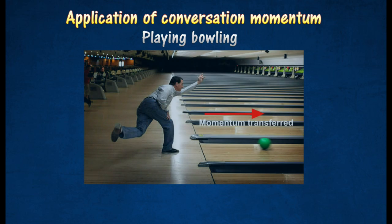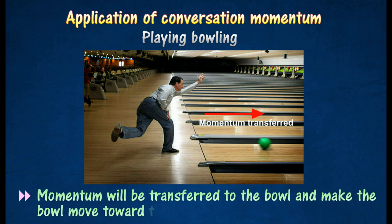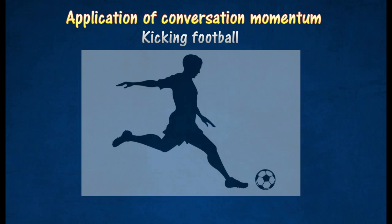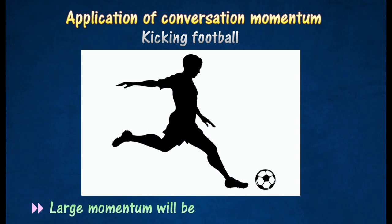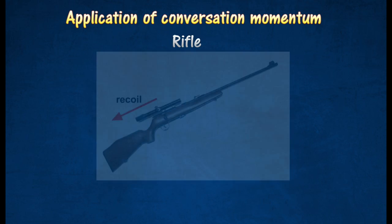Here are a few examples of real-life applications of conservation of momentum. When playing bowling, the momentum is produced by the bowler. The momentum is transferred to the ball and makes it move toward the lane. In the case of football, a large momentum will be transferred to the football when a football player runs and kicks the ball.